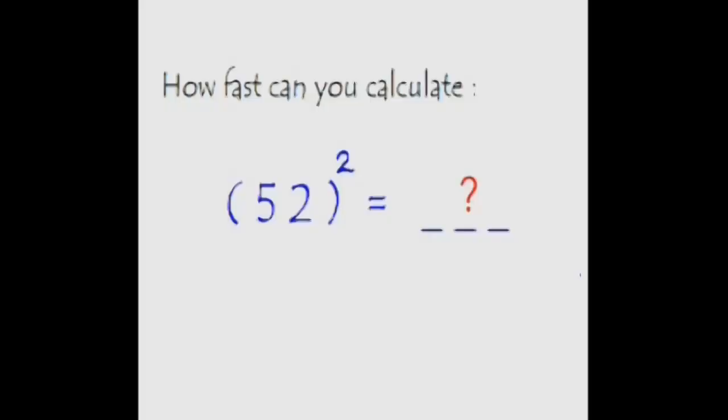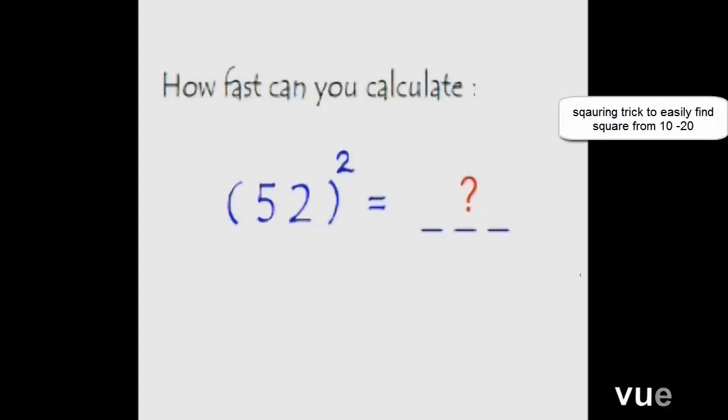So far we have covered the faster way of finding squares of numbers from 1 to 30. In this class we would be learning how to calculate the squares of any number between 30 to 70 at extremely fast speed.